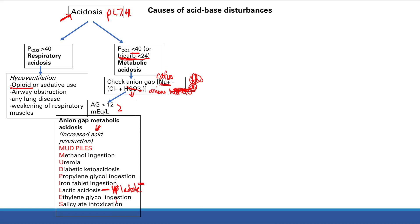The mnemonic we use to memorize anion gap metabolic acidosis causes is MUDPILES: Methanol ingestion, Uremia, Diabetic ketoacidosis, Propylene glycol ingestion, Iron tablet ingestion, Lactic acidosis, Ethylene glycol ingestion, Salicylate intoxication. You can just memorize it — it'll be totally fine for Step 1. If you'd like to understand why, there's a section in the notes explaining how each of these increases acid production. Any of these can cause anion gap metabolic acidosis, when sodium minus (chloride + bicarb) is greater than 12.